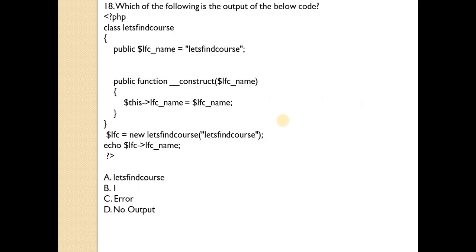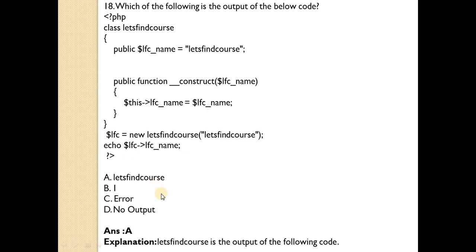Which of the following is the output of the below code? The code has one class called LearnCourse with one property and a construct function with one parameter. The this keyword is used to refer to the variable, and dollar lfc is the object of the class with one argument passed — LearnCourse. Answer is A — LearnCourse.